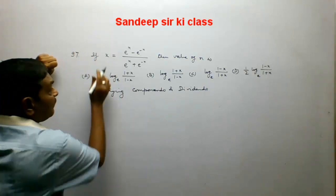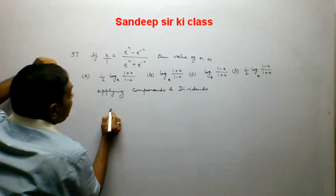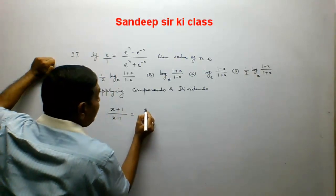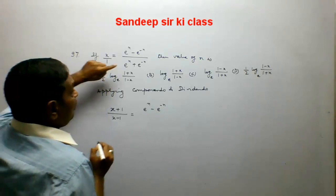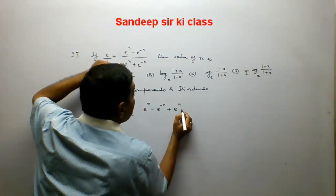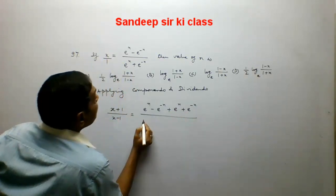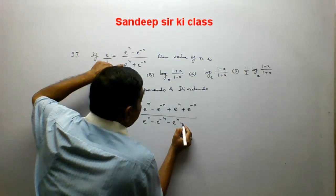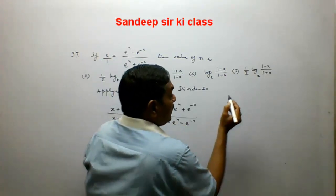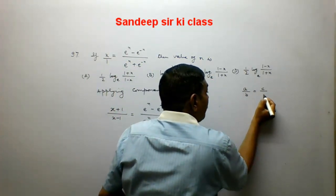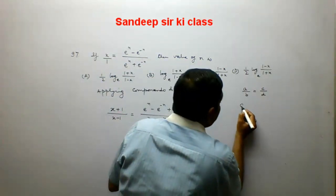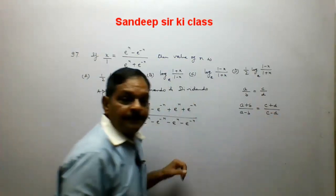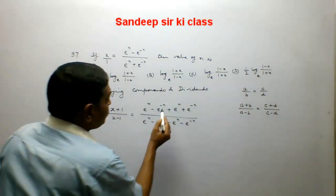Applying componendo dividendo: we obtain (1 plus x) upon (1 minus x) equals [(e to the power n minus e to the power minus n) plus (e to the power n plus e to the power minus n)] upon [(e to the power n plus e to the power minus n) minus (e to the power n minus e to the power minus n)]. The rule states that if a upon b equals c upon d, then (a plus b) upon (a minus b) equals (c plus d) upon (c minus d).